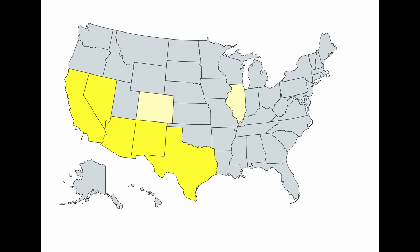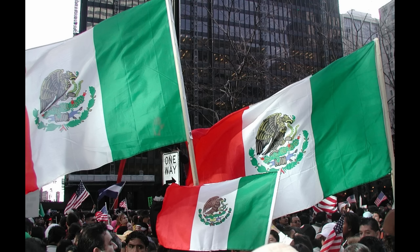Twelve percent of Americans trace their ancestry, at least in part, to Mexico. Mexican-Americans make up the largest ancestry group in much of the southwestern U.S., in states such as California, Nevada, Arizona, New Mexico, and Texas, all of which were once part of Mexico and not far from the country's border, and have been major destinations for immigrants from the country. Mexican-Americans make up the second most common ancestry group in another western state, Colorado, as well as Illinois, with the greater Chicago area having a pretty large Mexican community.